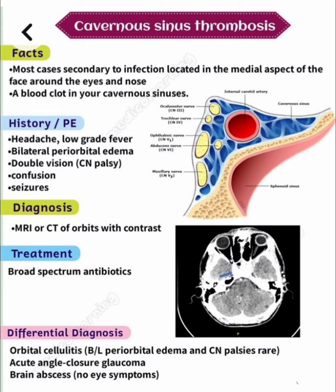The clinical features include headache, low-grade fever, bilateral periorbital edema, double vision due to cranial nerve palsy, confusion, and seizure. Diagnosis is by MRI or CT of orbits with contrast. Treatment is broad-spectrum antibiotics.